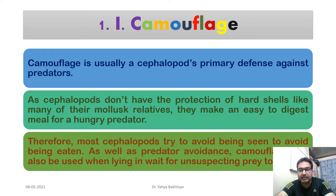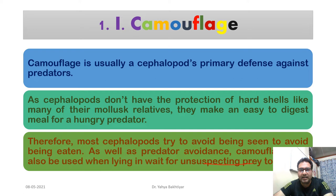Most cephalopods try to avoid being seen to avoid being eaten. As well as predator avoidance, camouflage is also used when lying in wait — they will wait for unsuspecting prey to come nearer. On one hand they hide from predators, and on the other they hide so that they can get closer to their prey.